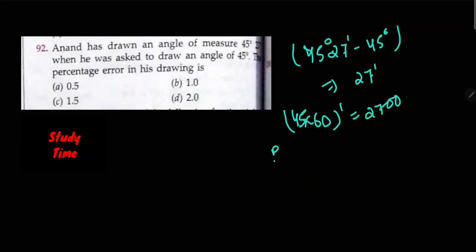So the percentage error equals 27 upon 2700, which equals 1 percent. The answer is option B.